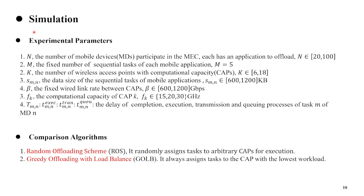Next is the experimental part. We set up several parameters, such as the number of mobile devices participating in the system, the number of sequential tasks of each mobile application, and the data size of each task, and so on. We consider two comparison algorithms: the first is a random uploading scheme, which randomly uploads tasks to edge servers and serves as a baseline algorithm; the second is a gradient offloading with load-balance (GLOB) algorithm, which always assigns tasks to the edge server with the lowest workload.